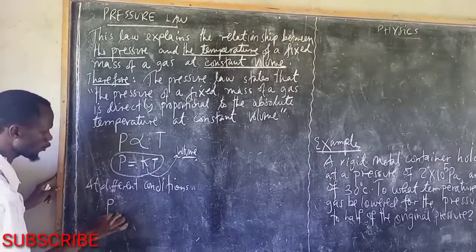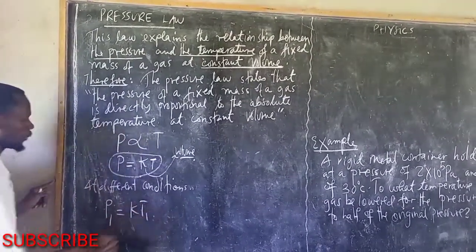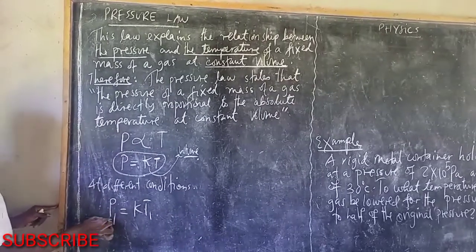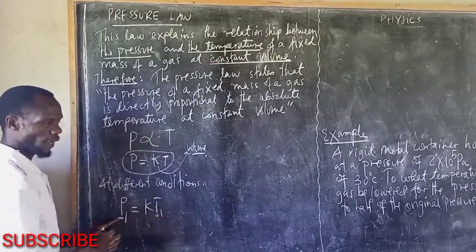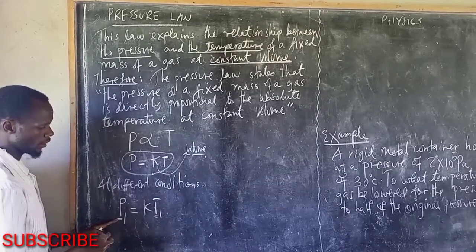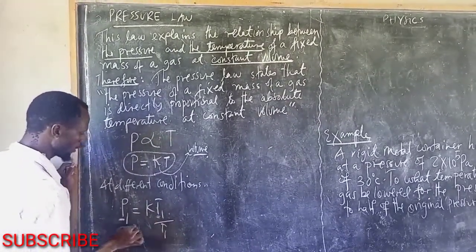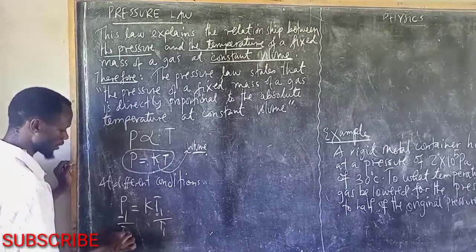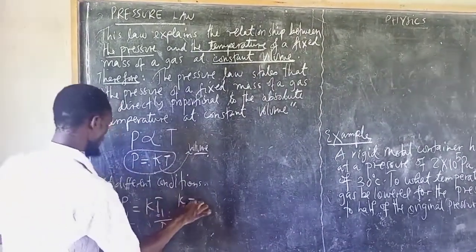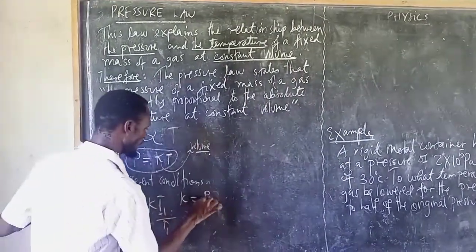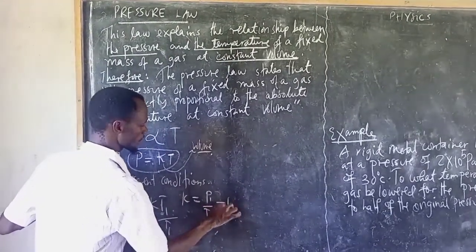At different conditions, let's say the first condition: P1 is equal to KT1, meaning pressure is P1 while the temperature is T1. Making K the subject, we divide by T1. Therefore, K is equal to P1 over T1. This is the first expression.